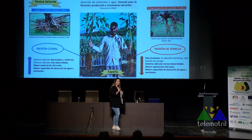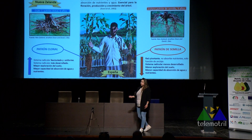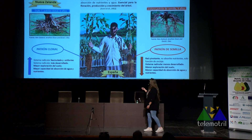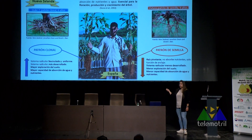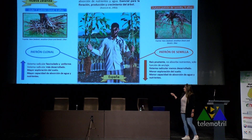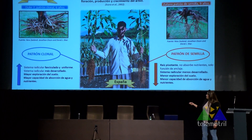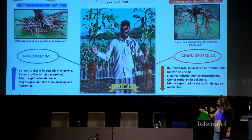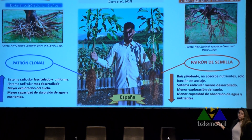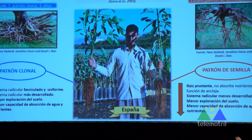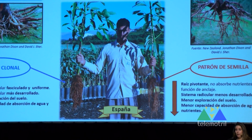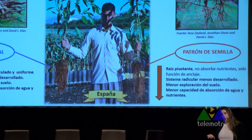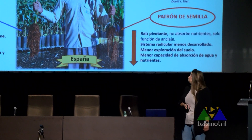Estas diferencias se ven ya desde que los árboles son jóvenes. Aquí en nuestro vivero podemos ver un árbol clonal y un árbol de semilla de la misma edad: el sistema radicular del clonal está muy desarrollado mientras que el del aguacate de semilla es mucho más pobre. Esta arquitectura radicular la conseguimos gracias al sistema de propagación que más tarde veréis en profundidad.